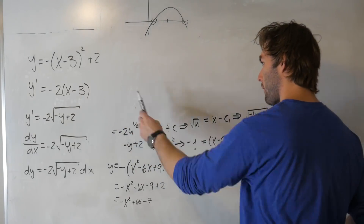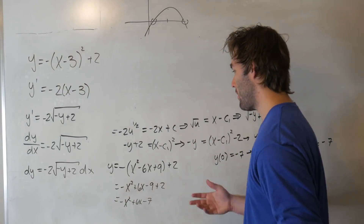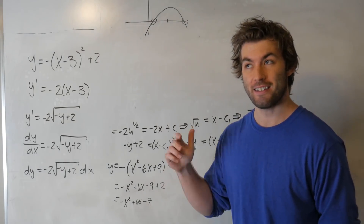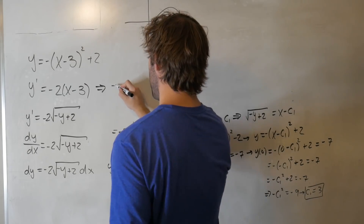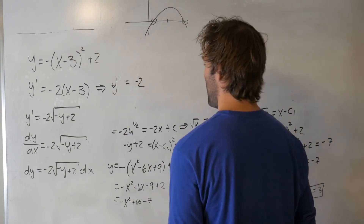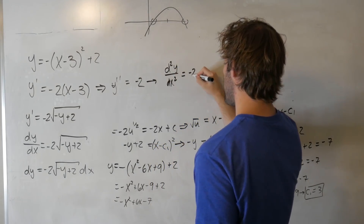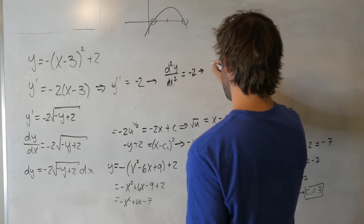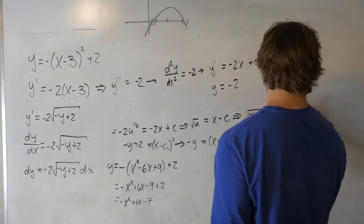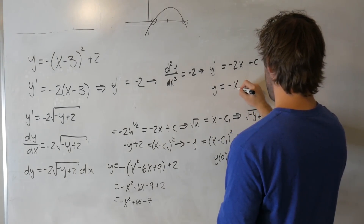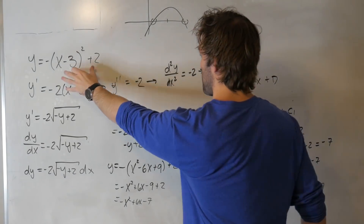One thing to take away: we solved a first-order differential equation, which gives us one constant of integration, which we solve for by imposing one initial condition. First-order differential equations are usually less general than second-order differential equations. If we take the second derivative of our equation, y double prime equals minus 2, or d²y/dx² equals minus 2. Integrate once: y prime equals minus 2x plus c. Integrate again: y equals minus x squared plus cx plus d. We now have two tunable parameters to model something even more general.